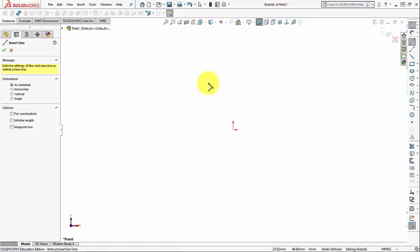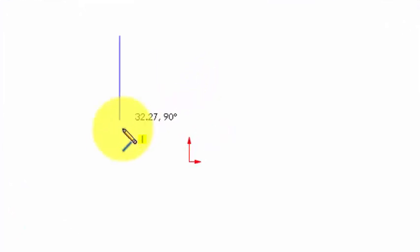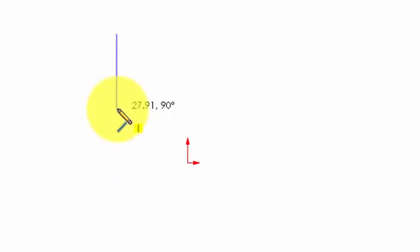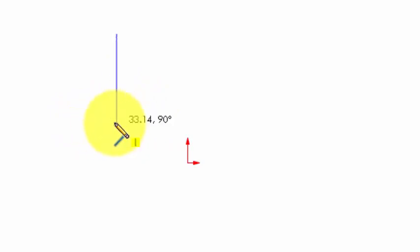I'm going to start the line command. Remember the first rule: we take care about the shape first, then we apply sketch relations or constraints to control the geometry, and after that we add dimensions. So somewhere here roughly I'm going to depict the shape of my model. When we are vertical we can see a yellow icon which indicates that SOLIDWORKS will apply the vertical sketch relation automatically.